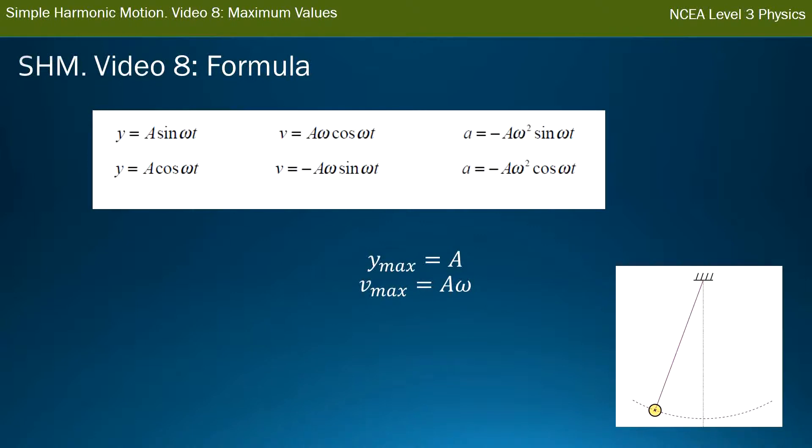And the largest value we can get for the acceleration is the same. Sine and cos, the largest they can get is 1, so you get the bit out the front, a omega squared.